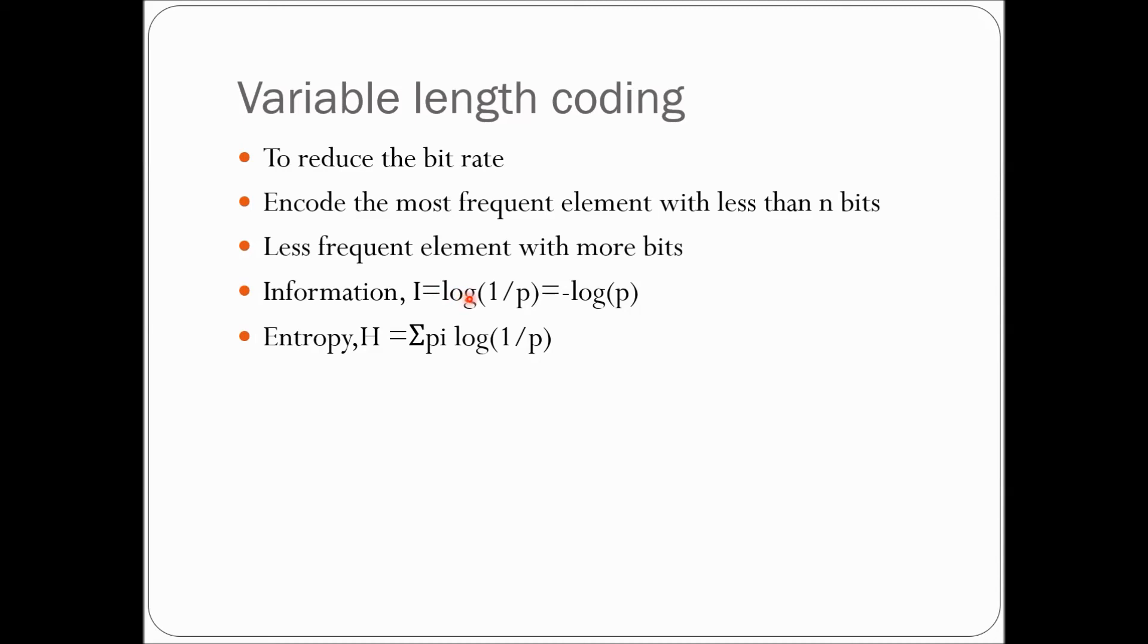The information is given as I equals log(1/p), which is written as minus log(p). And entropy H is written as sigma pi log(1/p). That is the sum of the information quantity of all elements generated by a source multiplied by their probability. Thank you.